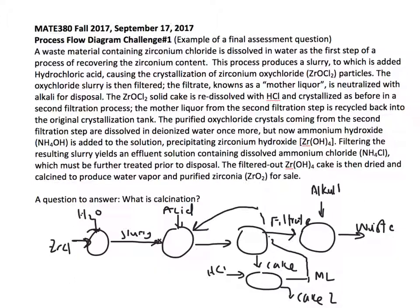The purified oxychloride crystals coming from the second filtration are dissolved in deionized water once more, but now ammonium chloride is added and you get this other precipitate. That cake is added to this other material.